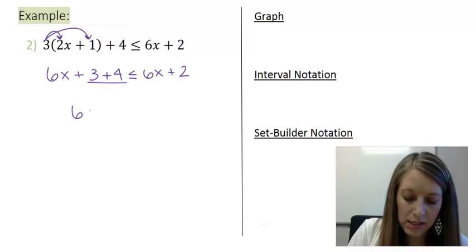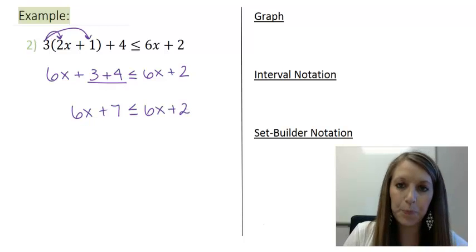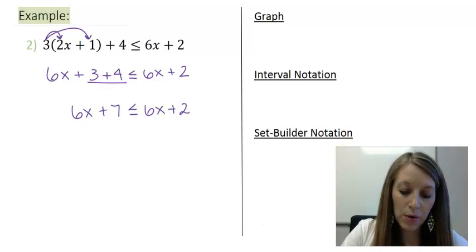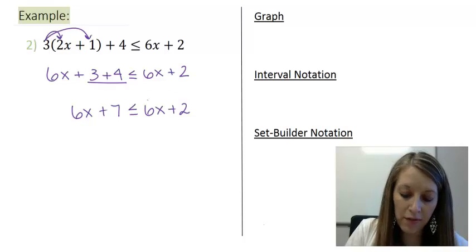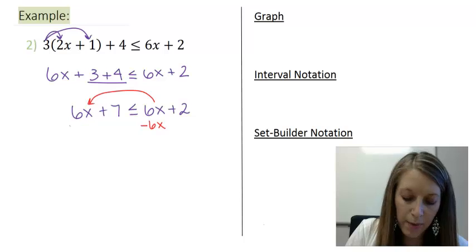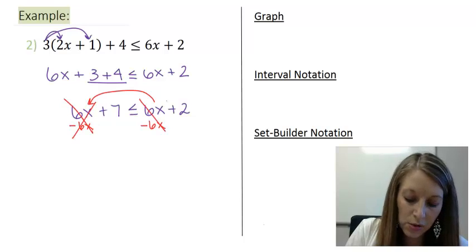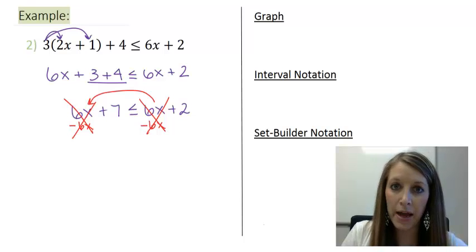Combining my terms gives me 6x plus 7 is less than or equal to 6x plus 2. Same thing. I want to rearrange this so I can put all my variables together. Let me move my 6x to the left by subtracting 6x. And notice it cancels on both sides of my equation.